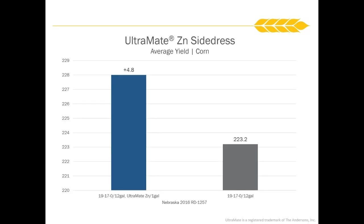This was a Nebraska study from a few years ago — we took a 19-17-0, which is a 10-34-0 and 28% mix, where we wanted to add some phosphorus into that tank mix. We know that phosphorus utilization increases when we add a humic acid, plus the addition of zinc. We saw a nice yield increase when we added the Ultramate ZN in with that 19-17-0.